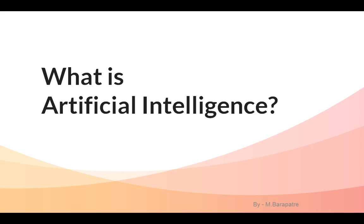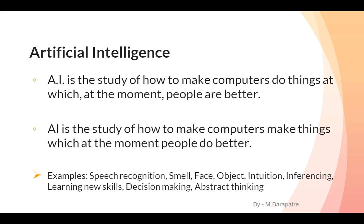Now, what is Artificial Intelligence? 'Artificial' means man-made, and 'intelligence' is what we exhibit. Artificial Intelligence is a branch of computer science which deals with helping machines find solutions to complex problems in a more human-like fashion. It generally involves borrowing characteristics from human intelligence and applying them as algorithms in a computer-friendly way.